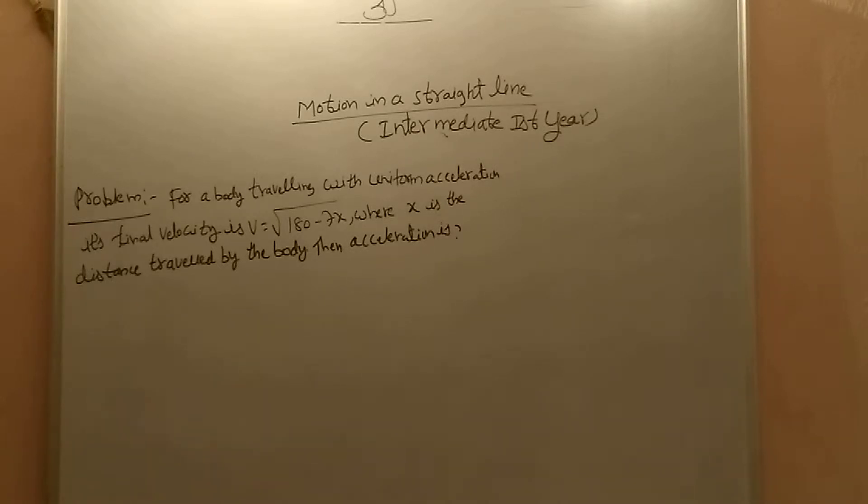For a body travelling with uniform acceleration, its final velocity is v equals to square root of 180 minus 7x, where x is the distance travelled by the body. Find the acceleration.